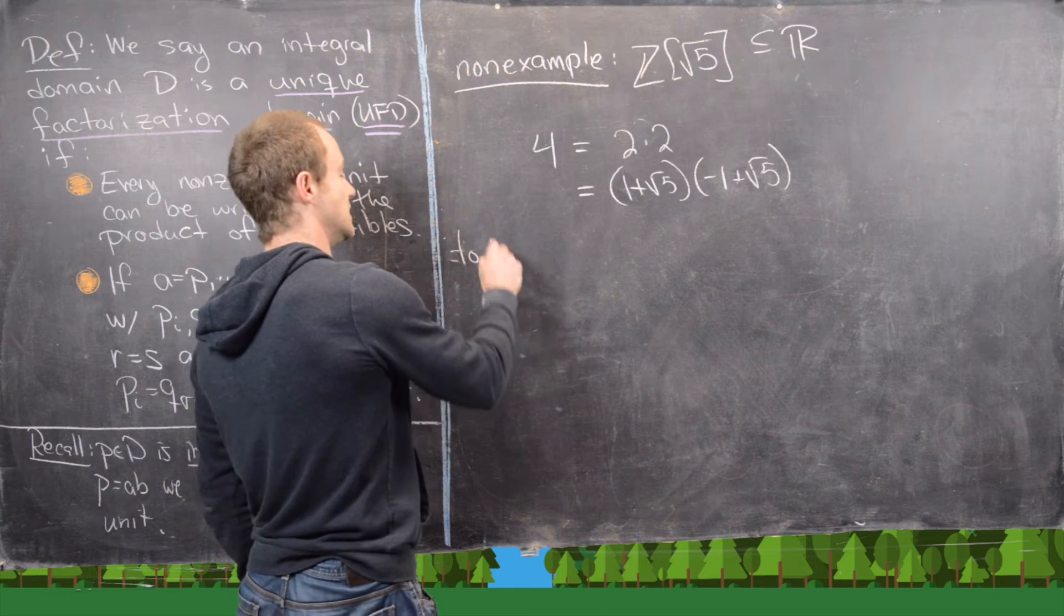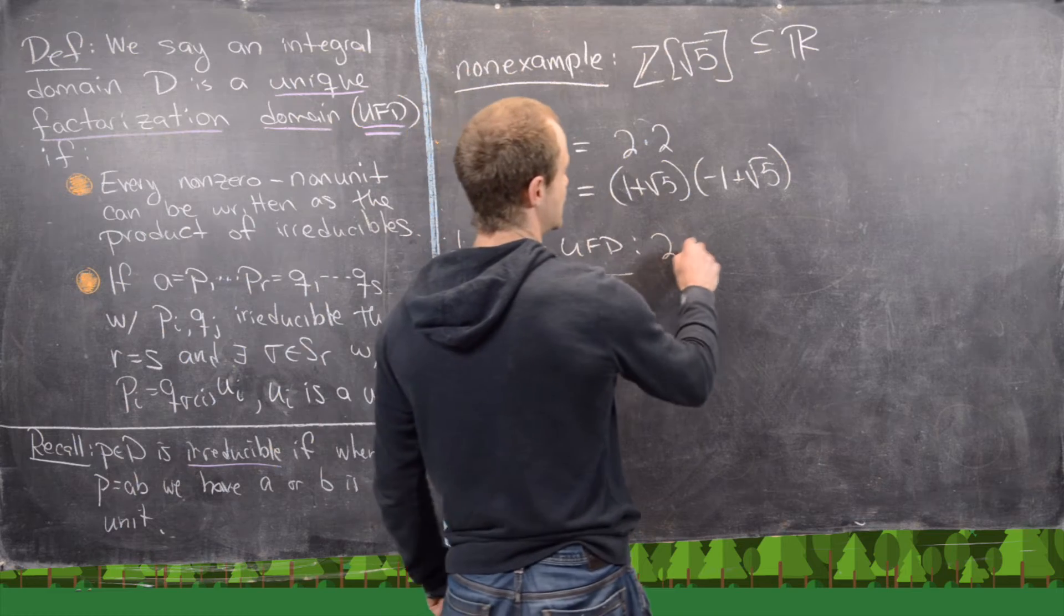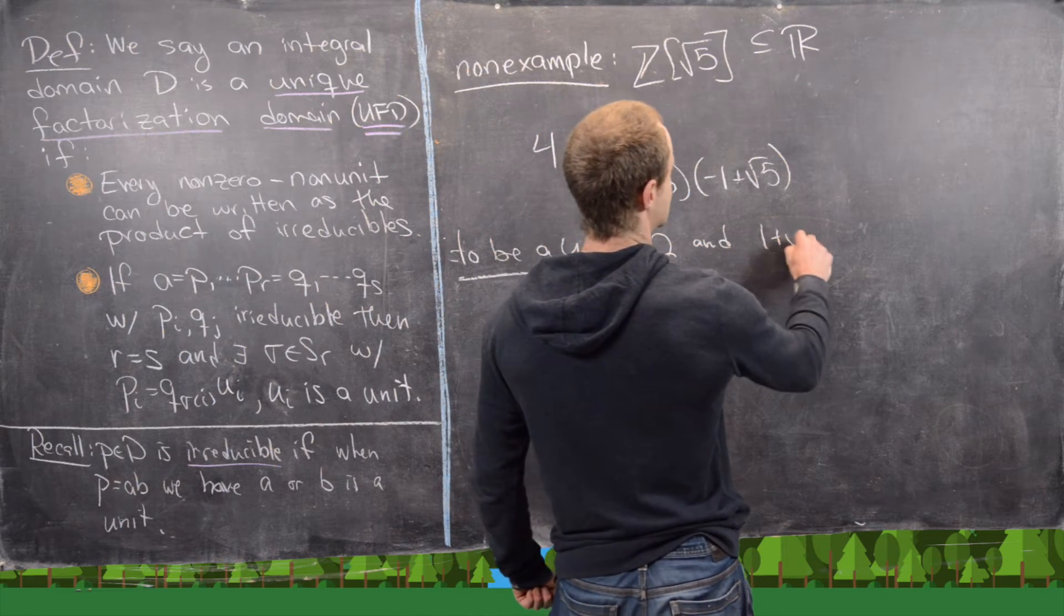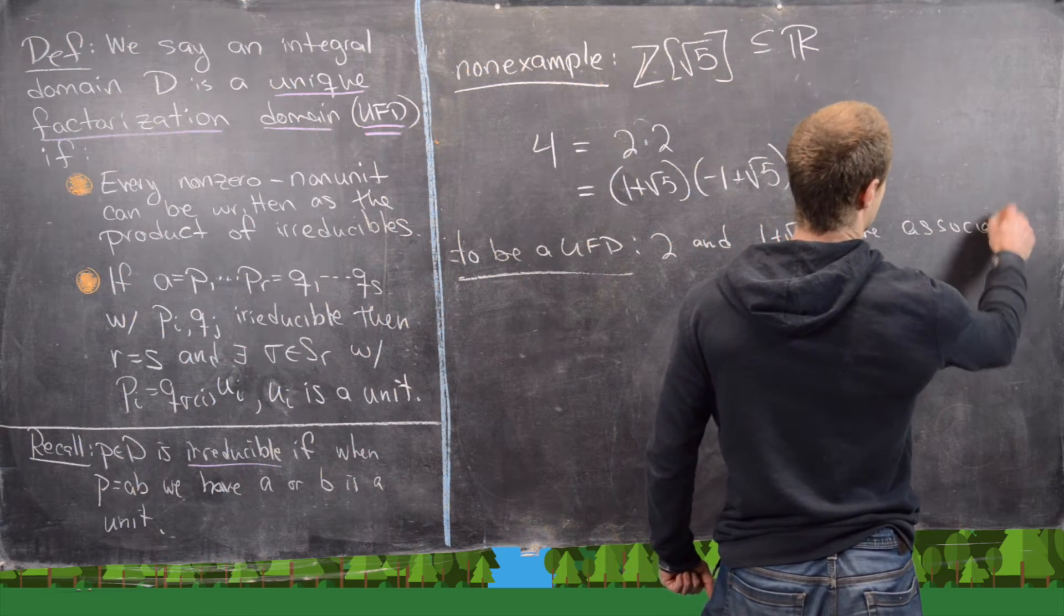We would need 2 and 1 plus root 5 are associates. Remember, associates mean they differ by a unit.